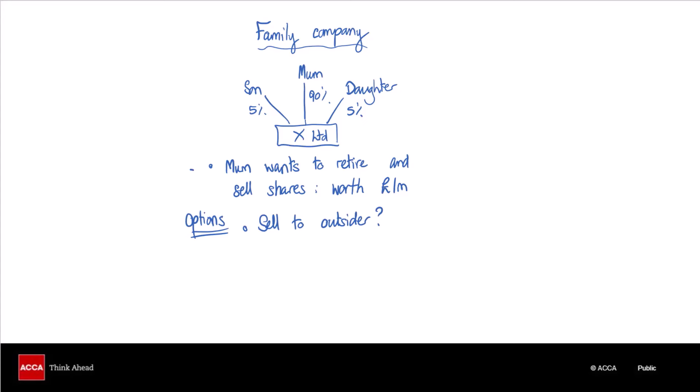Most obviously, mum could simply sell her shares to an outsider, which is a possibility. However, the problem with that is that she would then lose control — the family would lose control of the family company. Plus it might be quite hard to find a buyer if this is a small unquoted company.